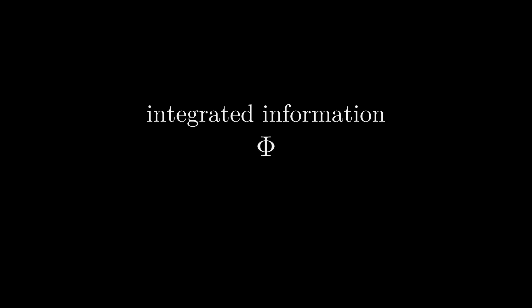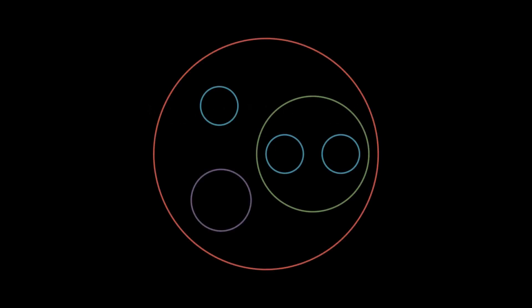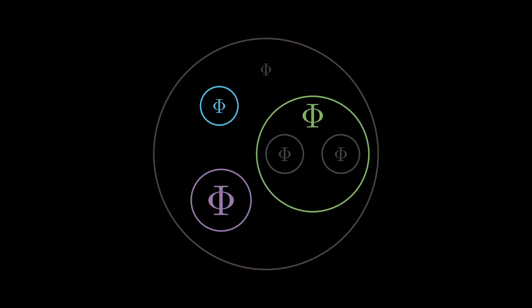Now, phi is a measurement that can be applied to any system. But among all overlapping systems and subsystems, for IIT it is only the ones with locally maximal phi that can be called conscious. But we'll come back to how that works later in the series. For now, to understand the underlying math of phi, we need first to explore some preliminary ideas. As I said, phi is applicable to any system, and that includes the brain.